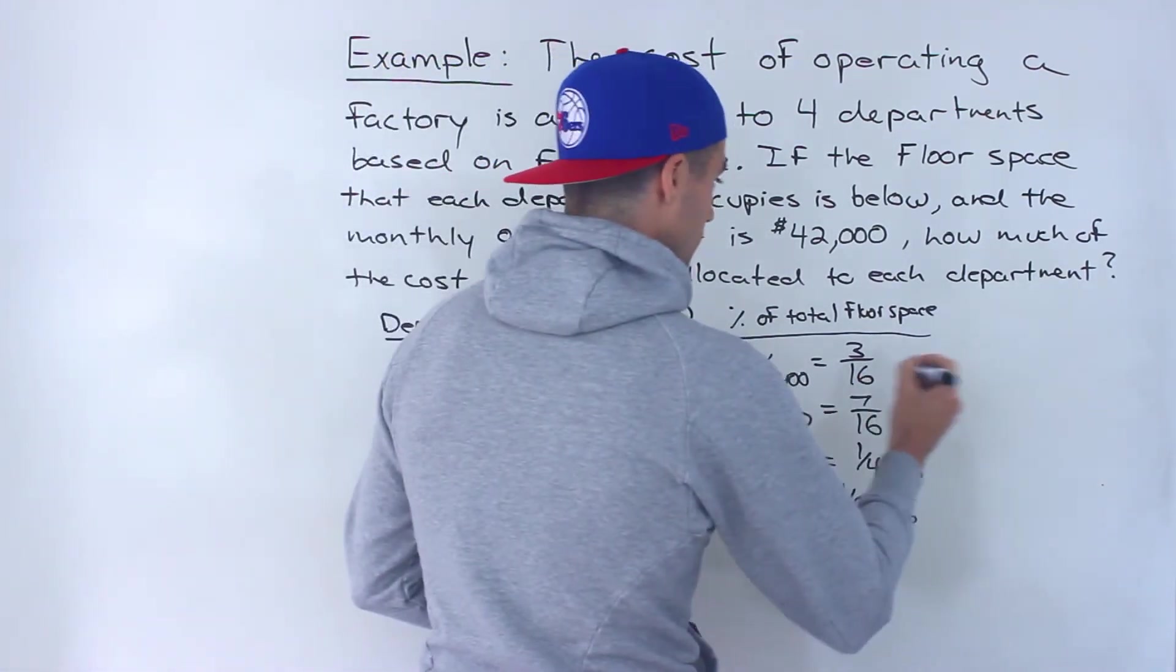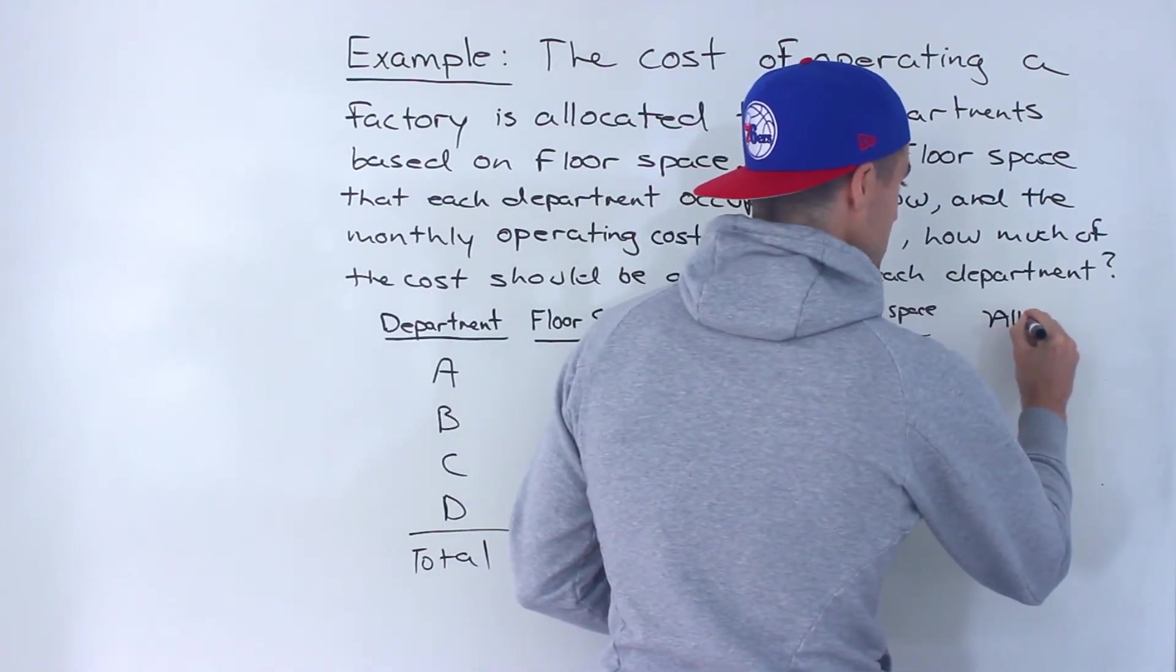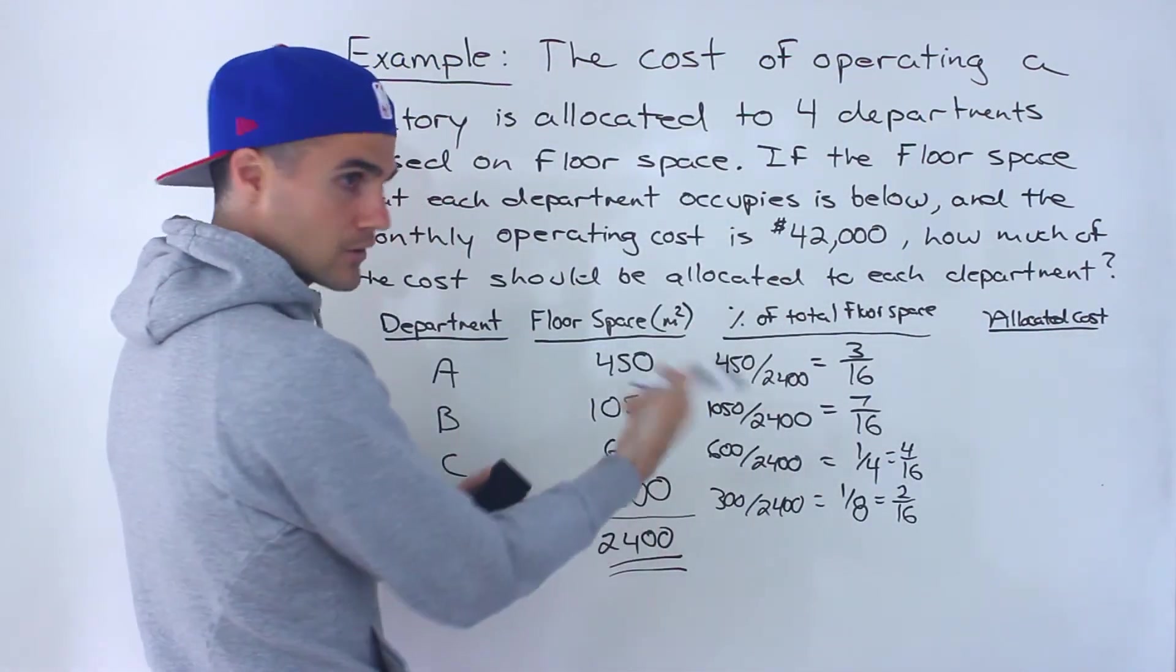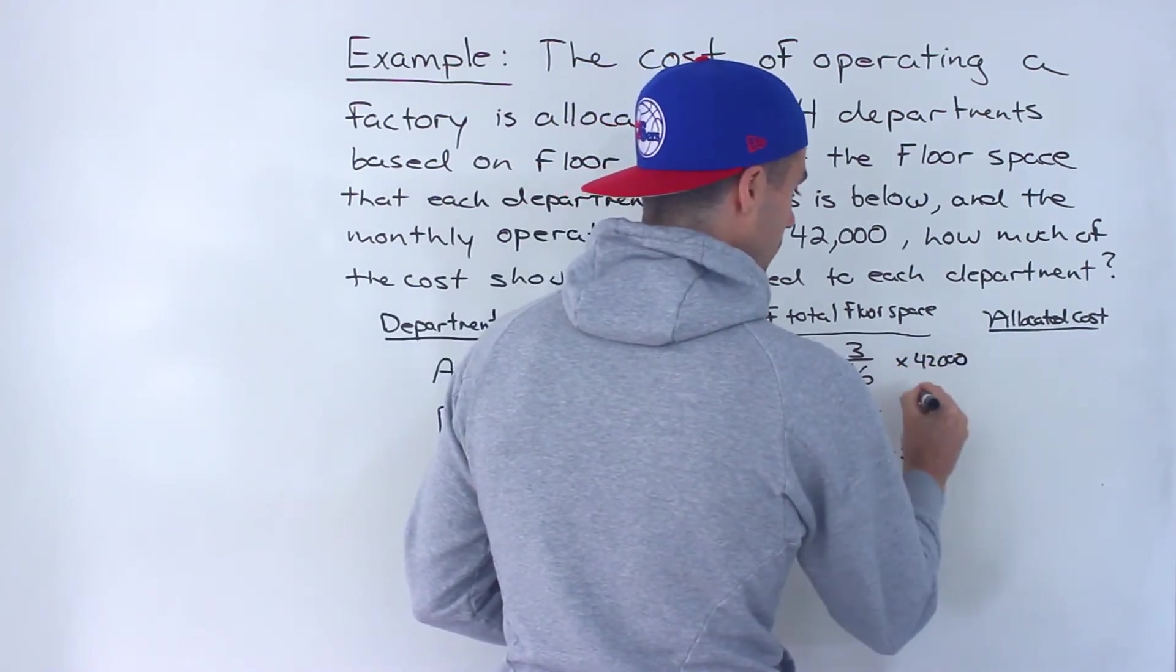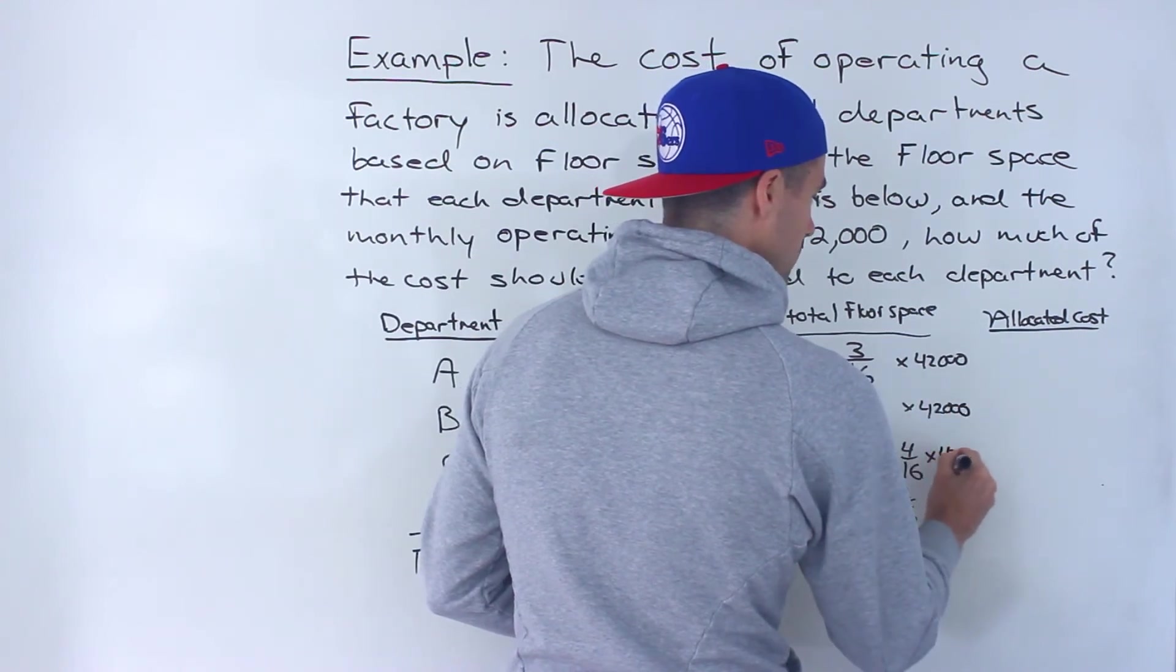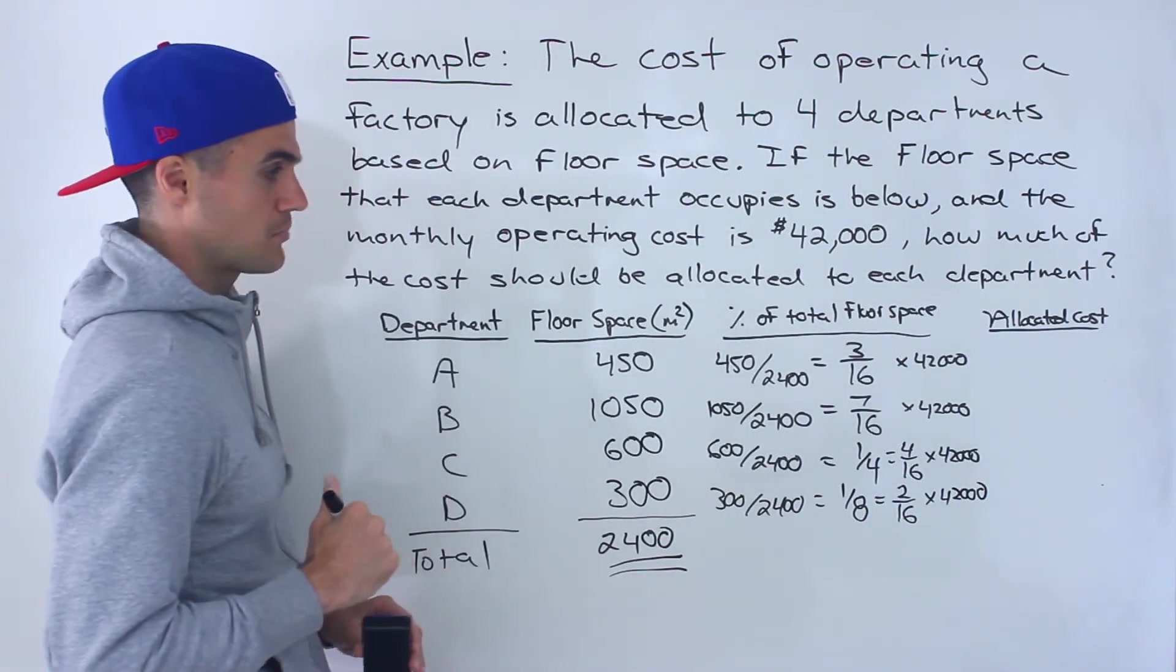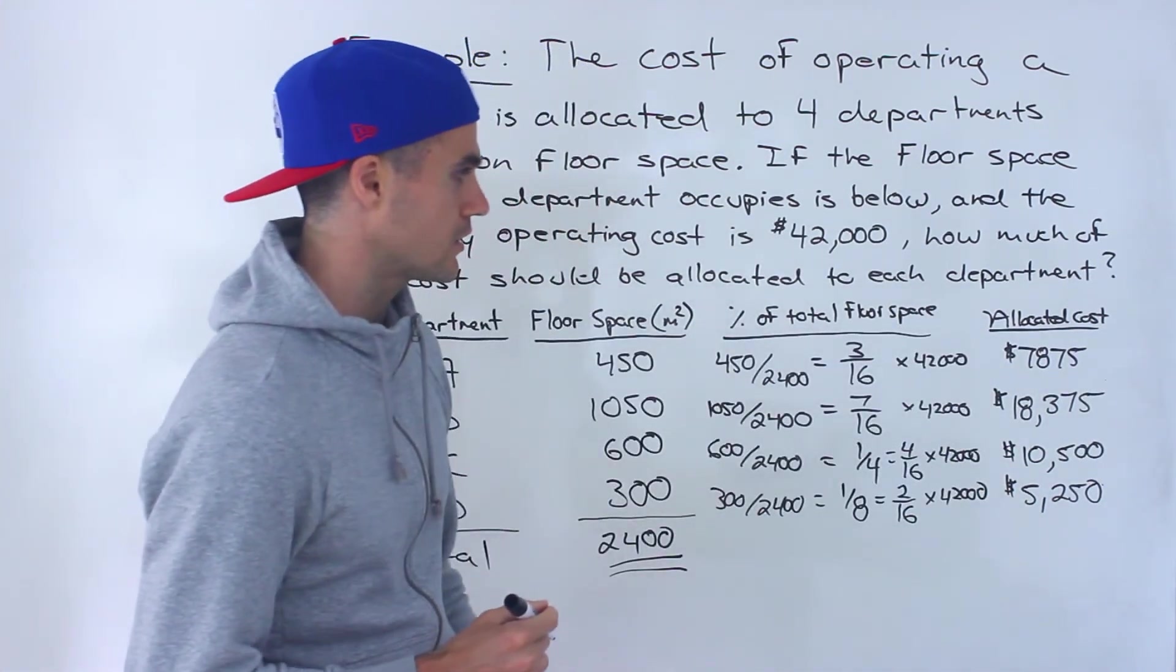And so then if you want to get the allocated cost to each department, how much of this 42,000 is going to be allocated to each department? You would just take these fractions, all these fractions, and multiply them by 42,000. And then you would get the respective costs allocated to each department. And when you do those calculations, you would get these respective costs over here.